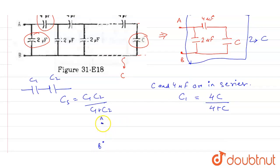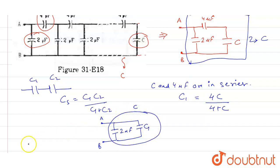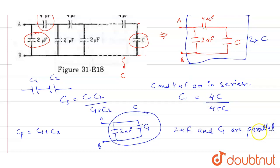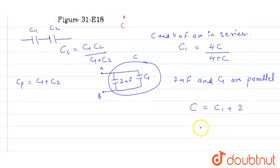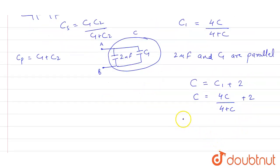Now when we redraw this figure, this is point A and this is point B. We have two microfarad and this capacitance C1. This whole capacitance is equal to C. When two capacitances are connected in parallel, the net capacitance is equal to C1 + C2. So two microfarad and C1 are in parallel, and the net capacitance C equals C1 plus two.